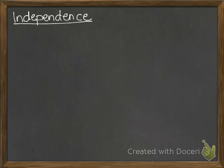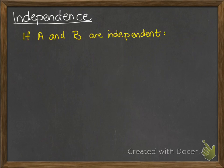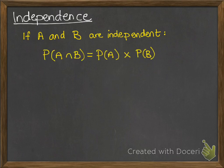Just a quick little video on independence and mutual exclusion. Two events are independent — so if A and B are independent — the probability of the intersection of them, that's the probability that both things happen at the same time, is equal to the probability of A on its own multiplied by the probability of B on its own.